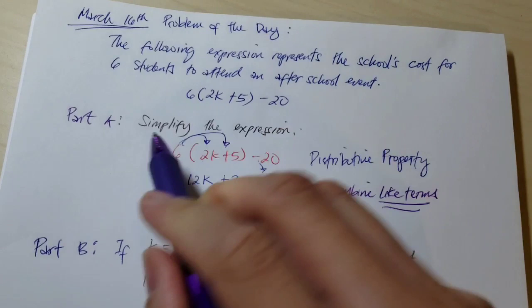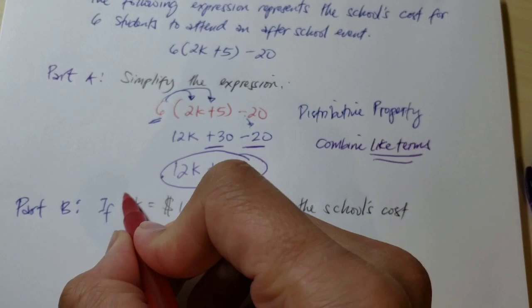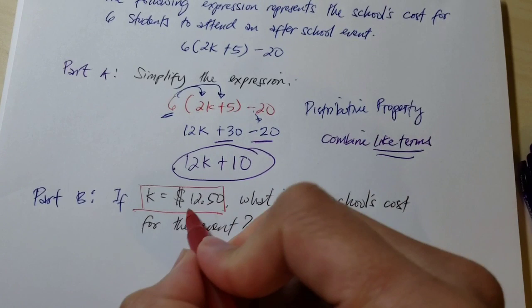Part B: If k equals $12.50, what is the school's cost for the event? The value of k is given, which is $12.50, so what we need to do is substitute 12.50 for k.